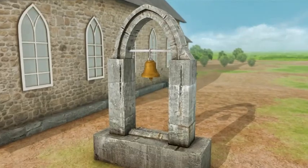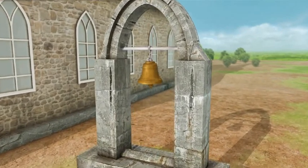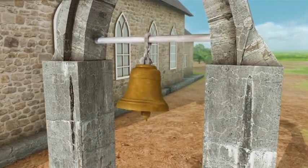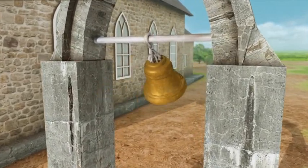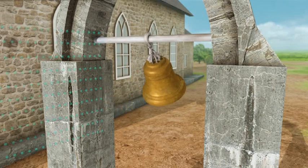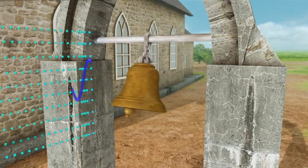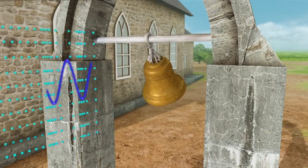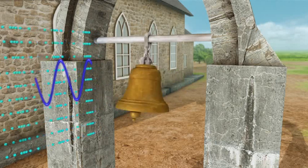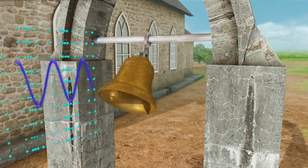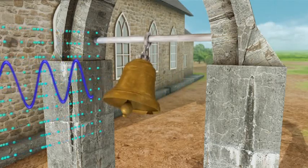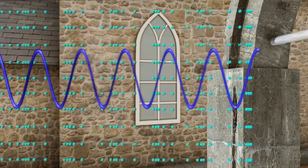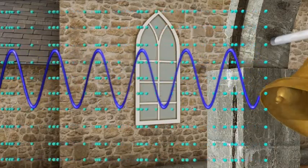Sound is a vibration that is moving through a medium. When we strike a bell, it will begin vibrating. These vibrations will cause movements to the nearby air molecules. The vibration of molecules near the bell will cause neighboring molecules to vibrate, which in turn will cause their neighboring molecules to vibrate. In this way, the vibrations will spread out from the bell in the form of waves.